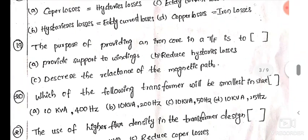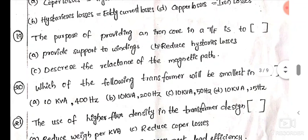19th. The purpose of providing an iron core in a transformer is to provide iron core as a magnetic path, high magnetic path, provides support to the windings, reduces the hysteresis loss, decreases the reactance of the magnetic path. This is 19th, 19th C is the answer.